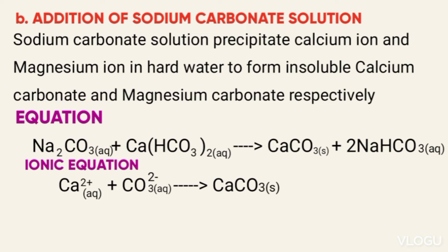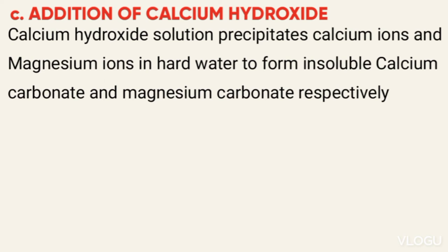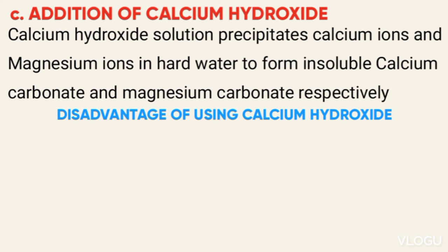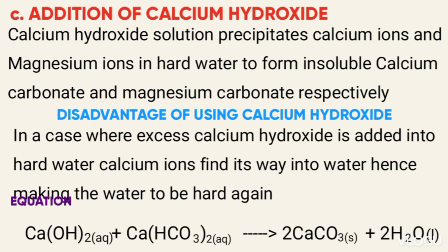Addition of calcium hydroxide: calcium hydroxide precipitates calcium ions and magnesium ions to form insoluble calcium carbonate and magnesium carbonate respectively. A disadvantage of using calcium hydroxide is that if excess calcium hydroxide is added, calcium ions remain in the water, making the water hard. The equation is shown below.